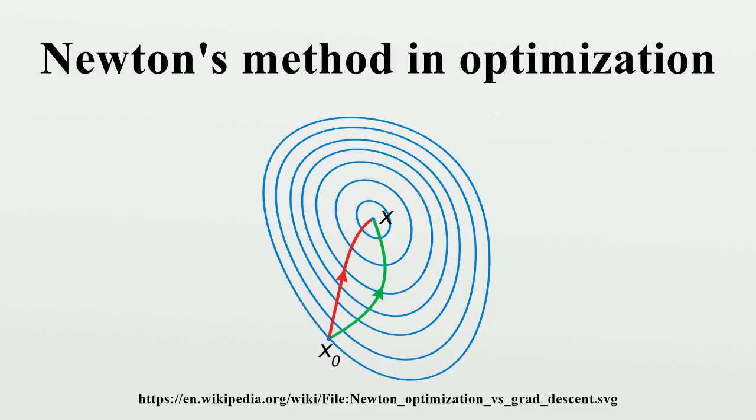Often Newton's method is modified to include a small step size gamma instead of gamma equals 1. This is often done to ensure that the Wolfe conditions are satisfied at each step x_n to x_{n+1} of the iteration.